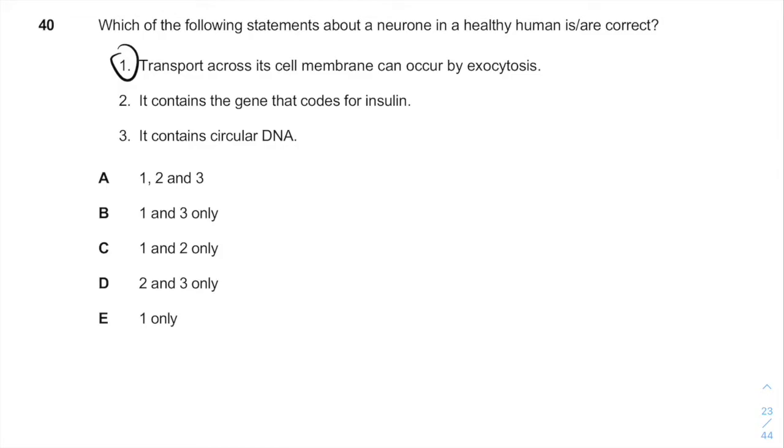It contains the gene that codes for insulin. This is one trick they love to do. All the cells in your body contain all the genes for all the different proteins. The difference between the cells is if the genes are expressed in the cells.